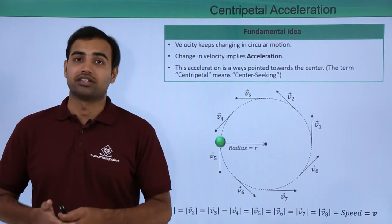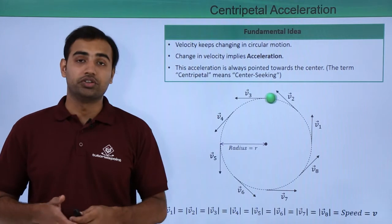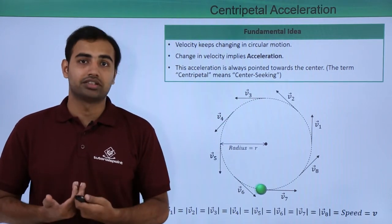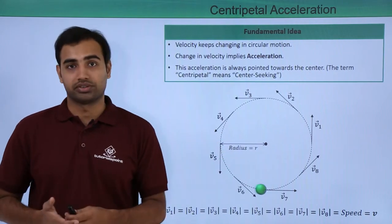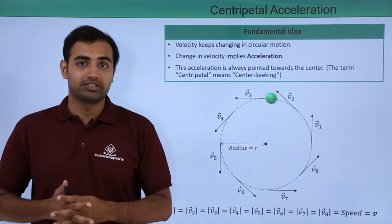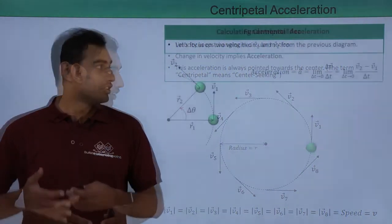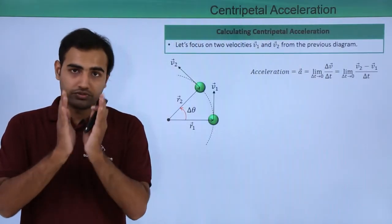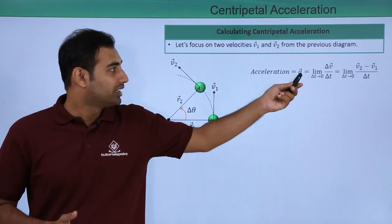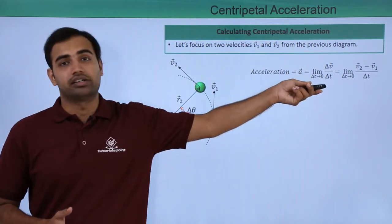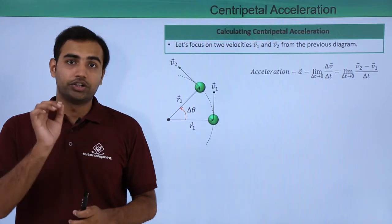That's why the name given to this acceleration is centripetal acceleration — centripetal also means center seeking. In the subsequent section of this video, we will try to derive a relationship between centripetal acceleration and the other known variables. Please pay attention because it may be a little tricky. We will begin by looking at the most fundamental definition of instantaneous acceleration, which is given by limit delta t tends to 0 of delta v by delta t. We already talked about this formula in the video of acceleration.